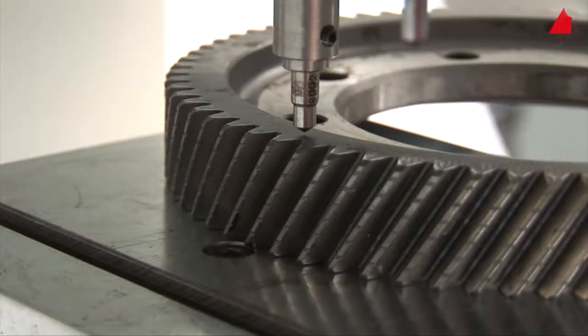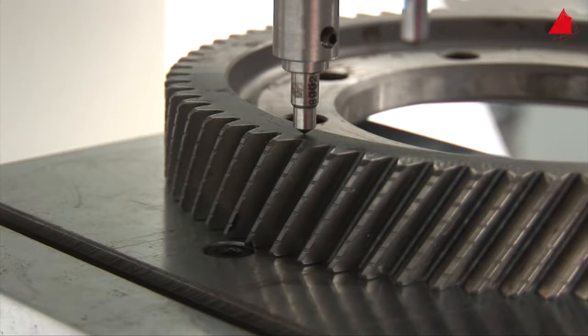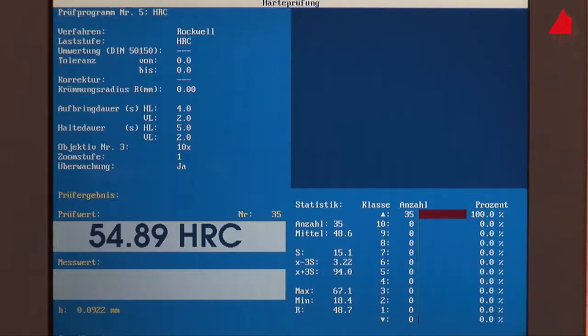In modern testing machines, the Rockwell hardness test is fully automated. That's why the Rockwell hardness test is used so often in automated production lines. That's it—the Rockwell hardness of our gear wheel is 55 HRC. This result is displayed on the screen.